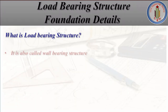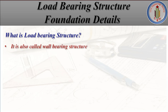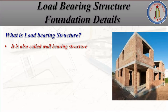Load bearing structure is also called wall bearing structure. In a frame structure — which uses columns, beams, and slabs — loads are transferred through columns and beams. In load bearing structure, we transfer the slab load and other floor loads through walls, without using any columns or beams. The key difference is that frame structure uses beams and columns, while load bearing structure uses walls to transfer the load.